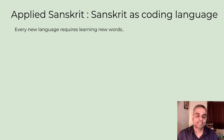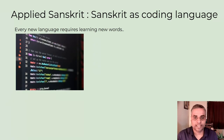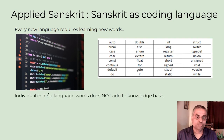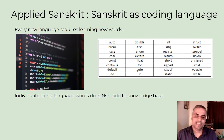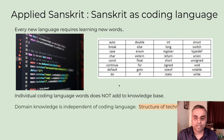Every new coding language requires learning new words. What you see on the screen is how a program or code looks like, and basically when we start, we start by learning these words, which are called keywords — each word has a specific meaning. Individual coding language words do not add much to your knowledge base in a traditional coding language. If I have to know what is 'auto', 'break', or 'case', it gives slightly some knowledge about programming but overall doesn't add much.